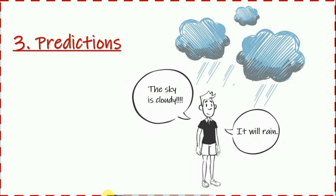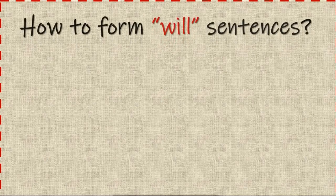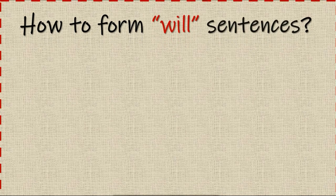To predict something means to think and believe that something will happen in the future, and you can use 'will' to talk about this prediction. Now, after knowing when to use 'will,' you need to know how to form 'will' sentences. We have three forms of 'will' sentences.